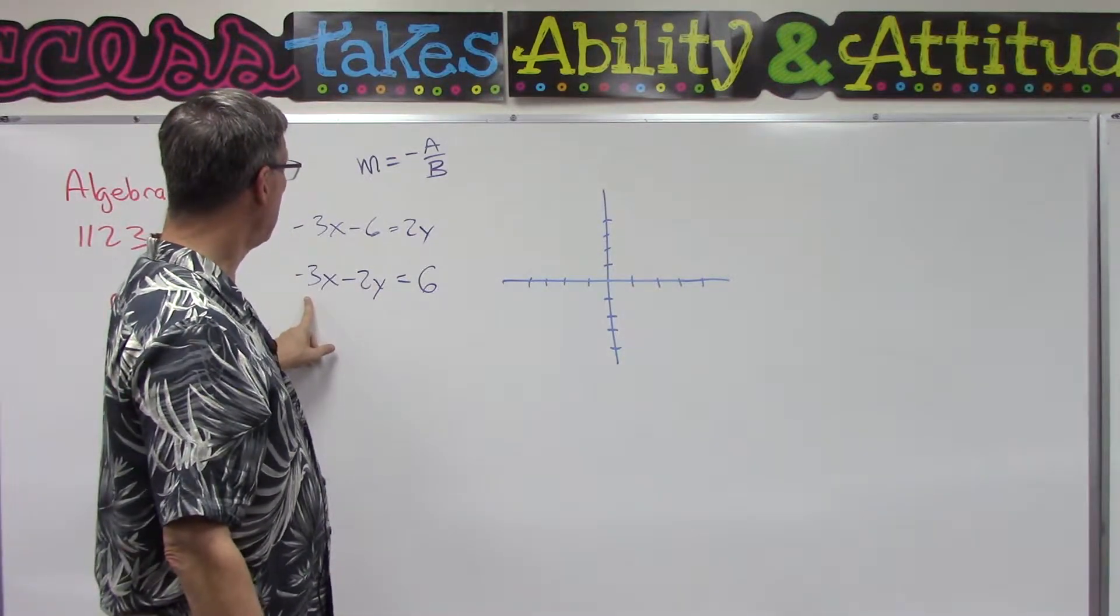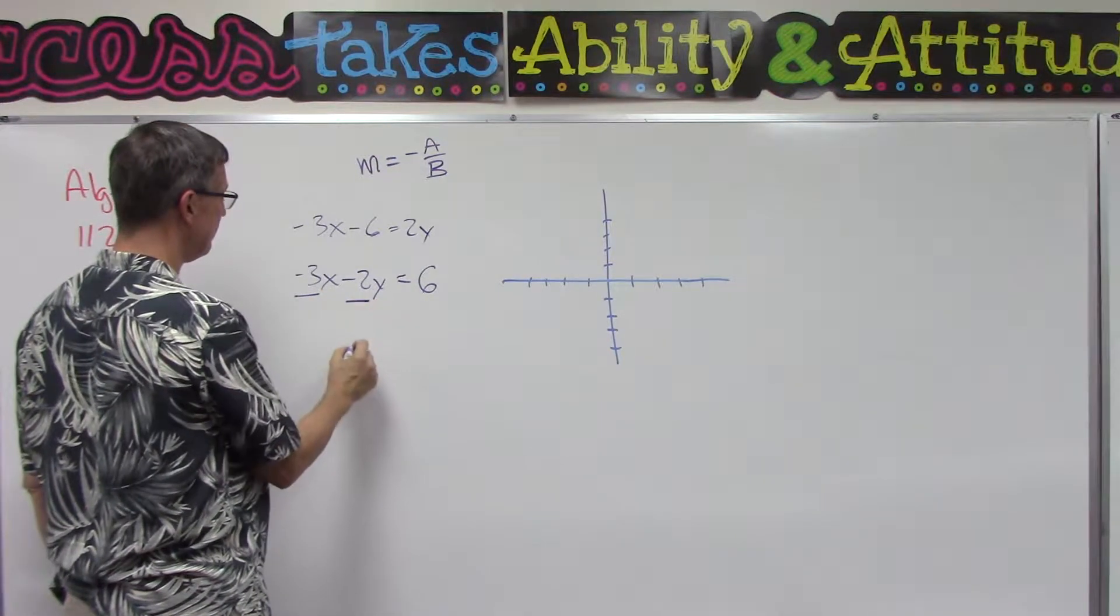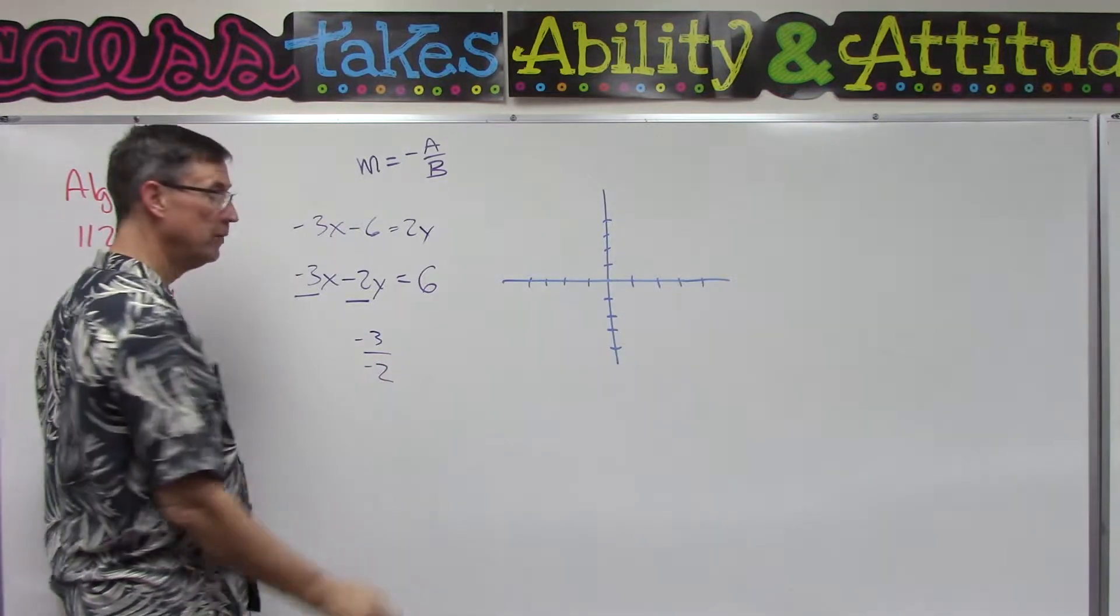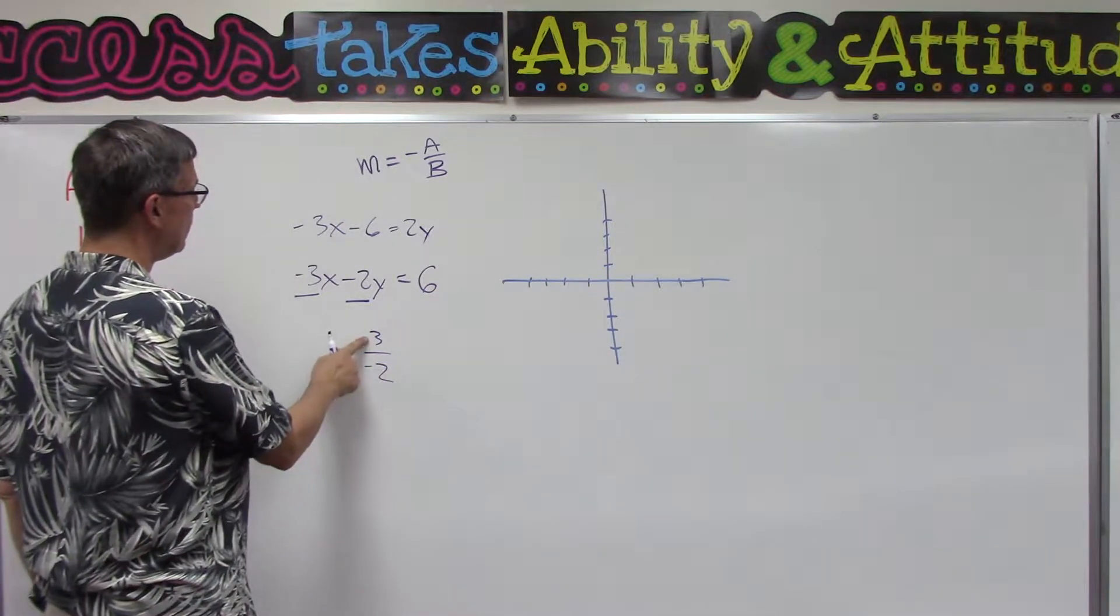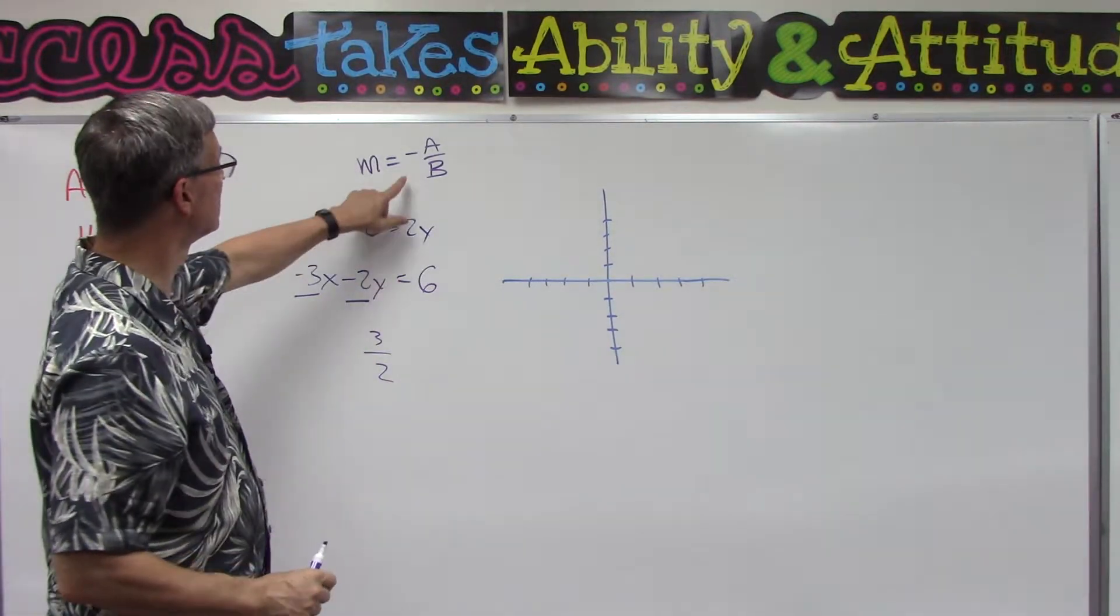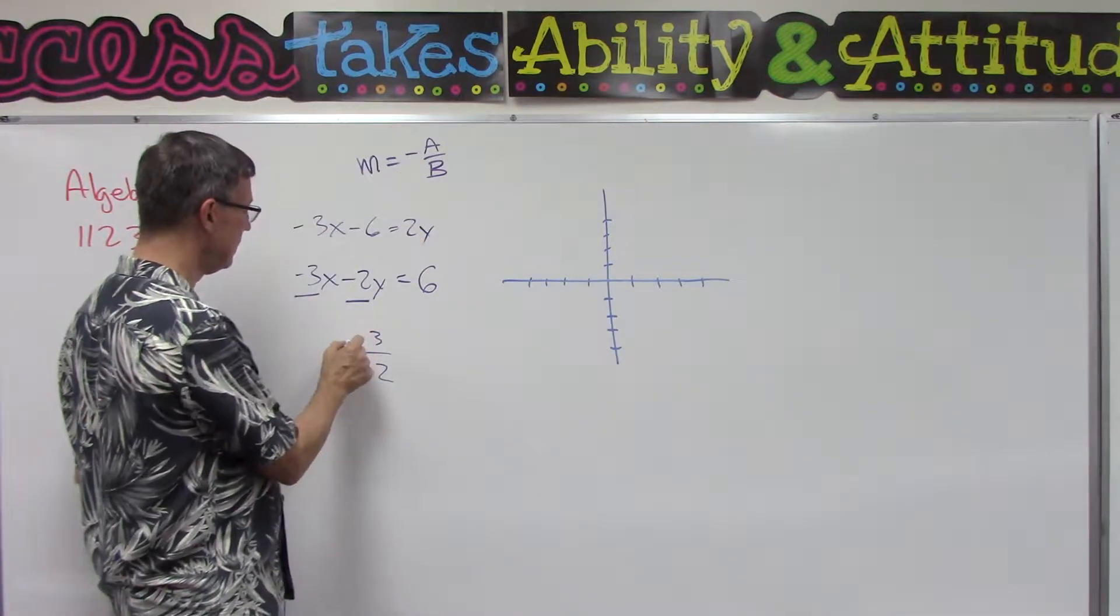Now this is A, this is B. So negative 3 over negative 2, which would be 3 halves. But the slope is actually the opposite of that, so it's going to be negative 3 over 2.